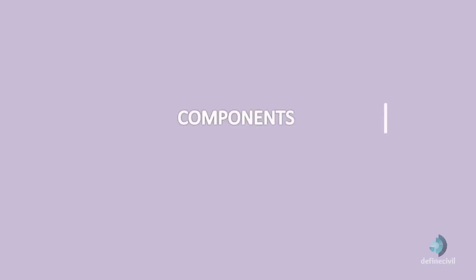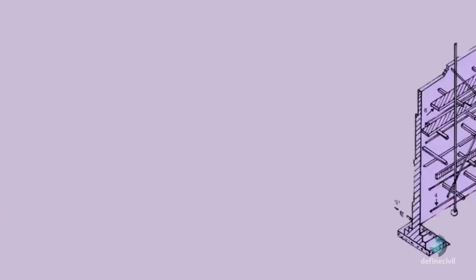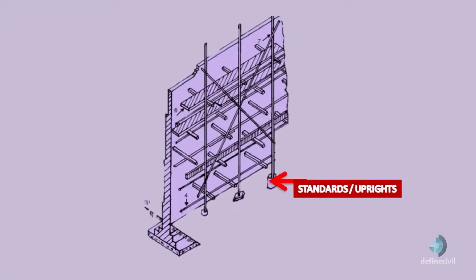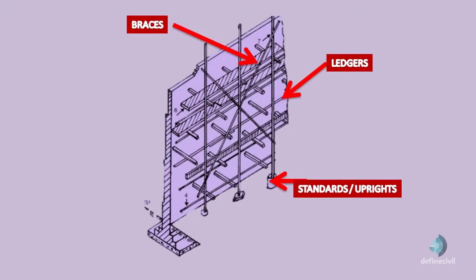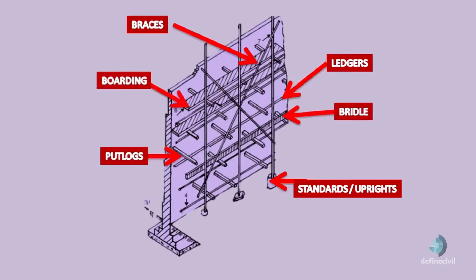Let's now start with the introduction of different parts of scaffolding. 1. Standards — the vertical posts, also called uprights. 2. Ledges — the horizontal members parallel to the wall. 3. Braces — the bracing system. 4. Putlogs — horizontal members normal to the wall. 5. Transoms — putlogs whose both ends are supported on ledges in double scaffolding.